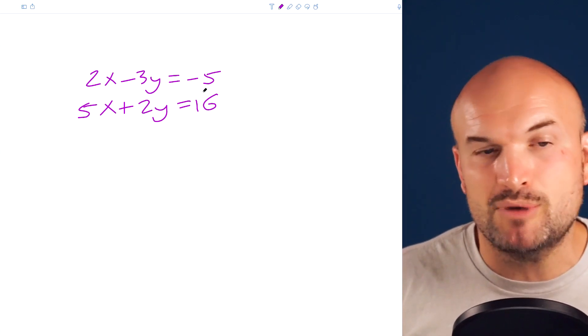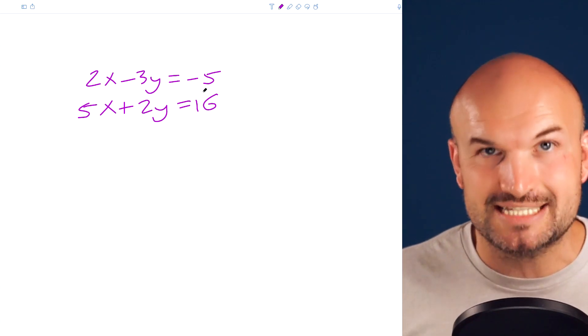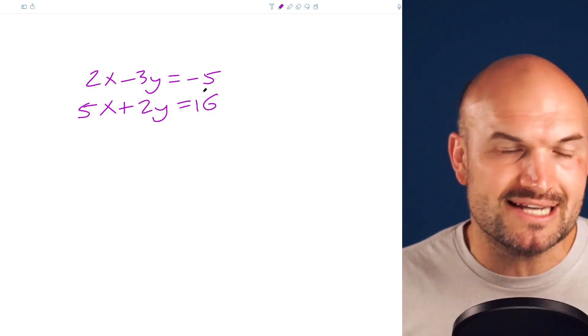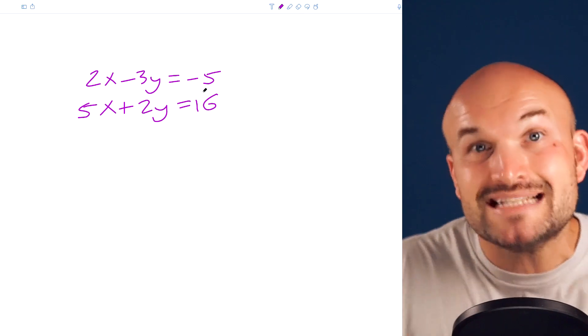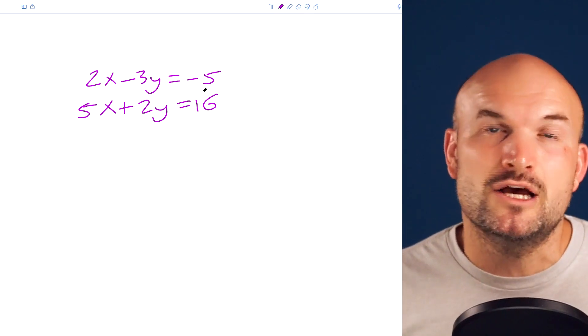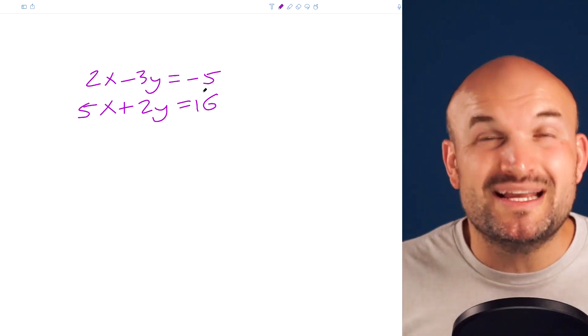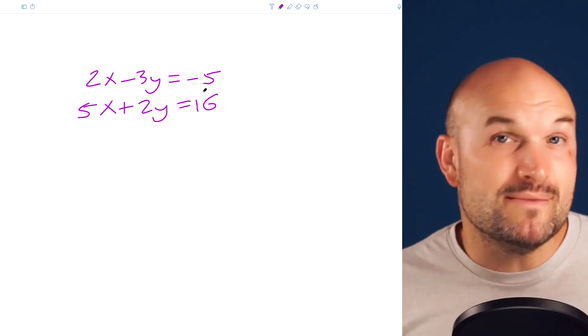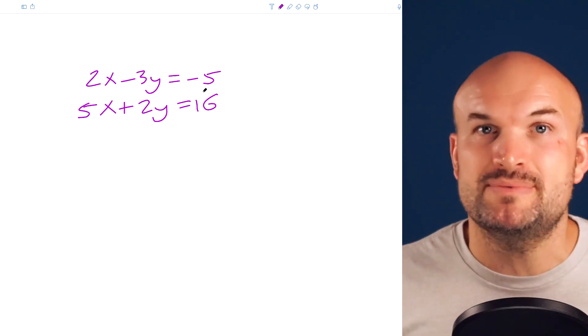And what we recognize is the least common multiple of 3 and 2 is 6. And that's what I want to obtain. Now recognize that one's negative and one's positive, and that's perfect because that's going to help us when we combine the two equations. But first, we got to get the coefficients to be the same. One positive and one negative is going to be preferred.